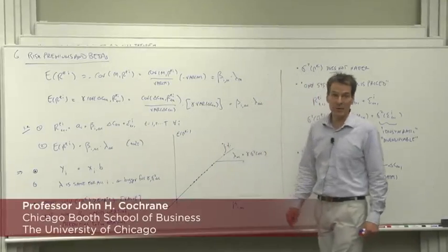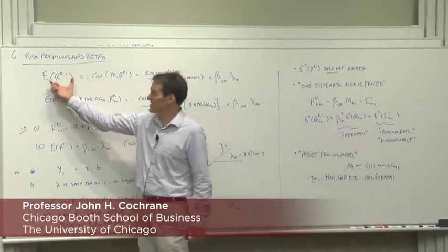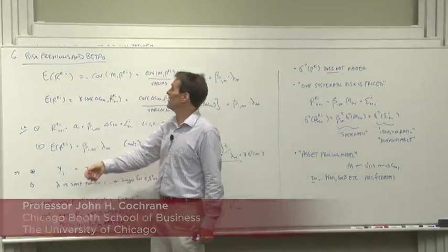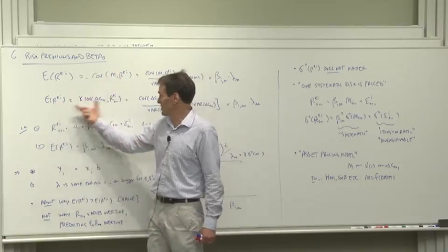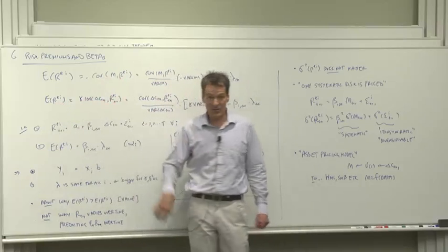So next let's think about risk premiums and betas. Where we were is we have expressed expected returns, the risk premium, in terms of a covariance with the discount factor or in terms of a covariance with consumption growth. I emphasize that covariance, not the variance of the return, matters.